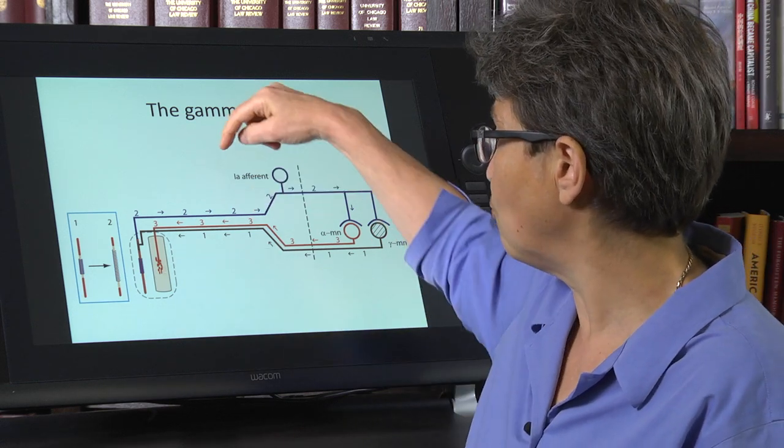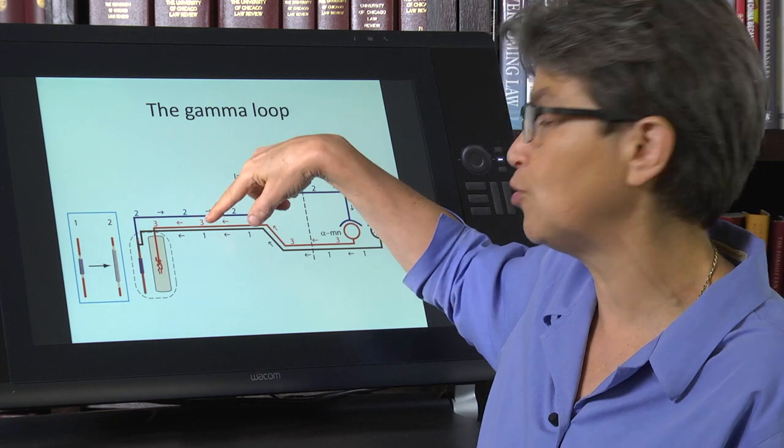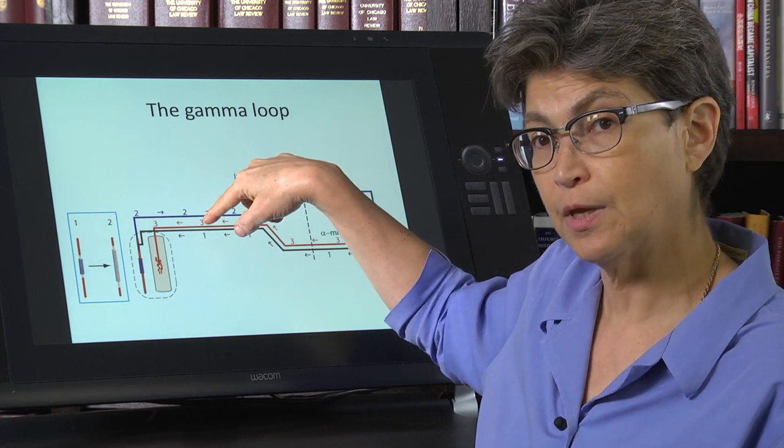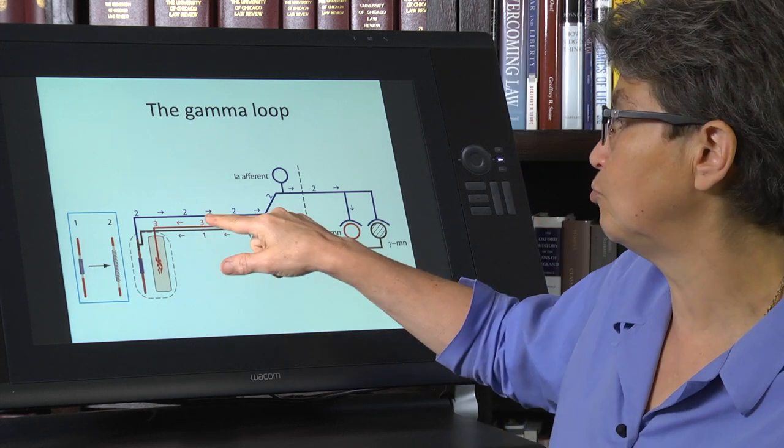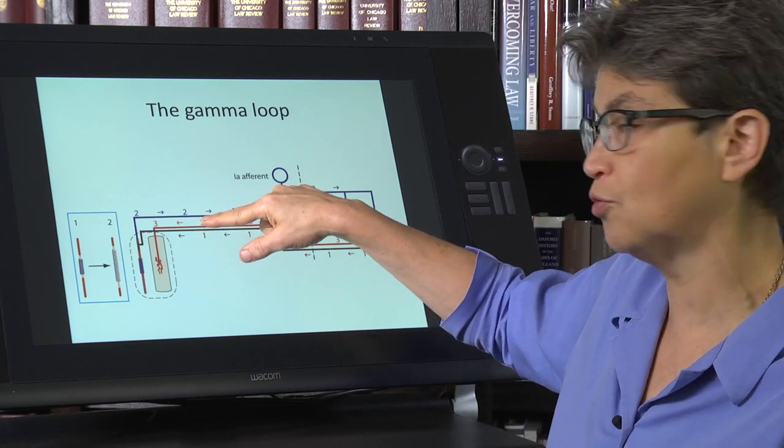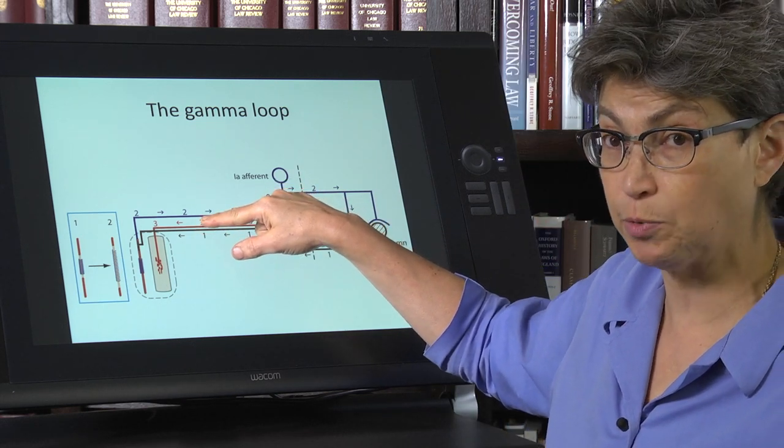And we're going to put a stimulating electrode in the nerve. This stimulating electrode doesn't know who these different neurons, these different axons belong to.